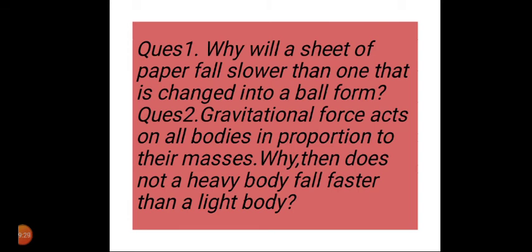Now I am going to ask some questions. Question 1: Why will a sheet of paper fall slower than one that is changed into a ball form? I hope you can answer this question. I am going to tell you the answer. When a sheet of paper falls slower than one that is changed into a ball form, it is because the surface area of sheet of paper decreases as it is changed into a ball form. The air resistance on it also decreases. Thus we can say it will fall faster than the plain sheet that falls at a slower rate due to greater force of friction of air on it.